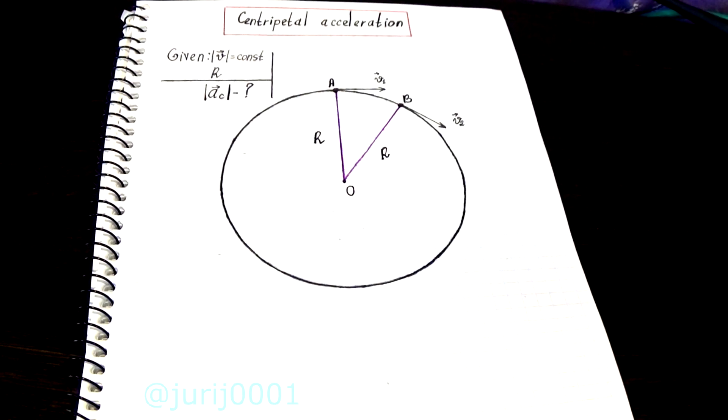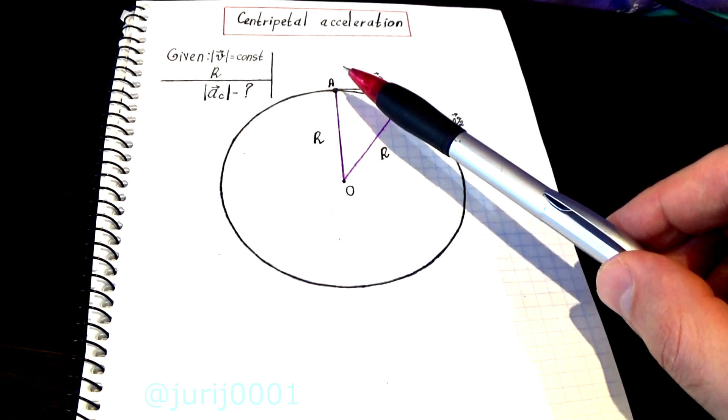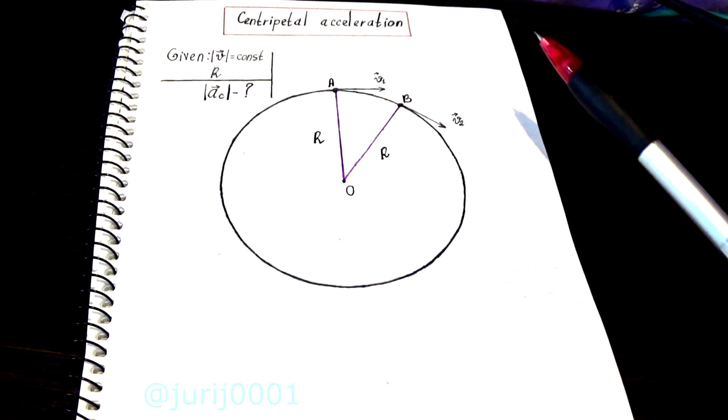Suppose the body moves along a circuit of radius R, with a constant module velocity V. Initially the body was located at point A, after some time interval, at point B.